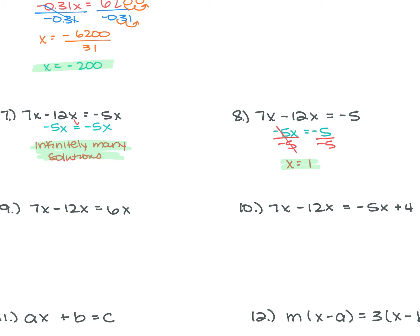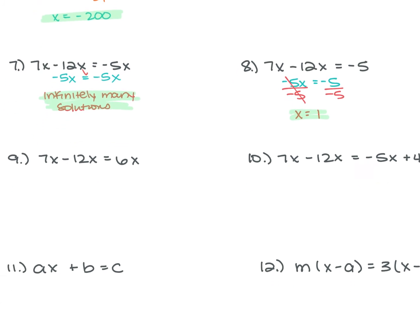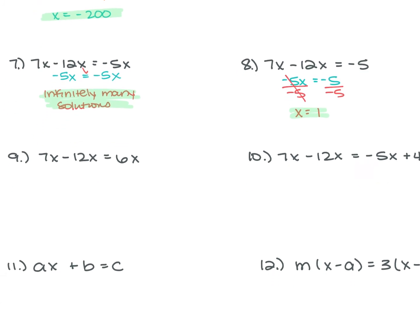For number 9, we have 7X minus 12X is equal to 6X. The 7X minus 12X is negative 5X, so negative 5X equals 6X. That's a false statement, so our answer is no solution.